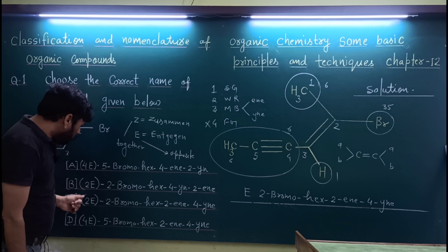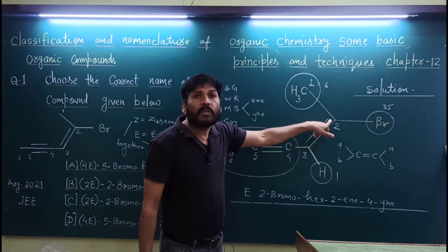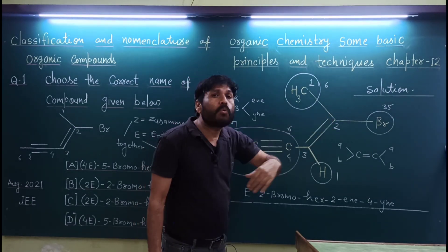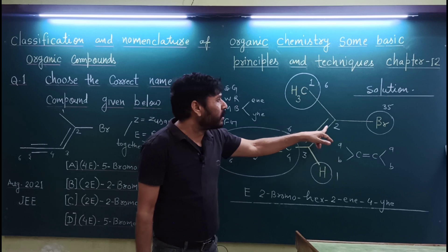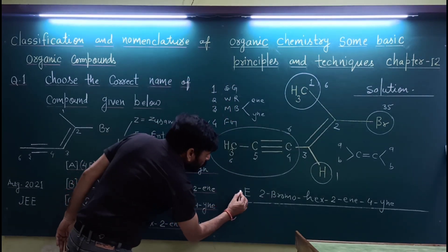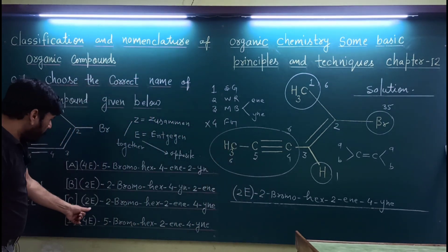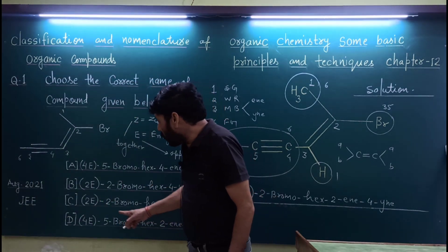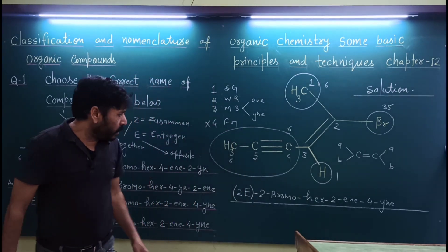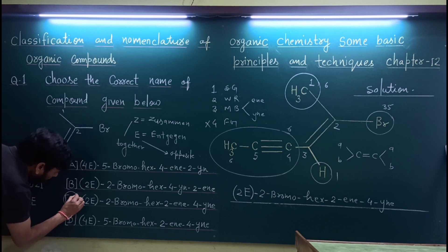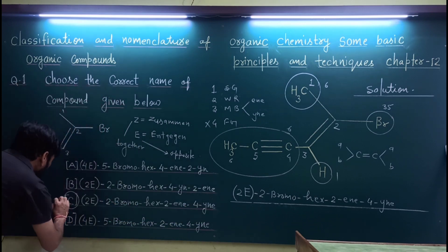तो यहाँ नाम में E लिखा जाएगा। Options में 2E और 4E दिये हैं — 2E का मतलब है double bond 2 number पर है, इसलिए 2E लिखते हैं (पूरा 2,3 नहीं लिखते)। तो final answer है: 2-Bromo-Hex-2E-4-yn। यह option C से match करता है — this answer is correct।